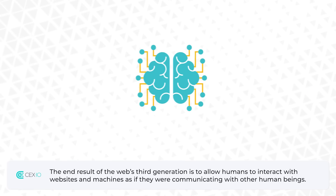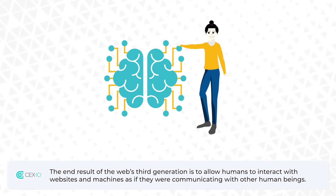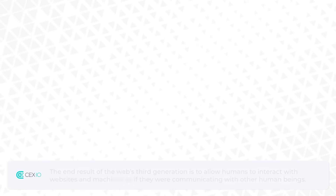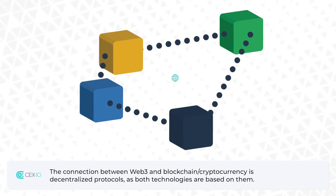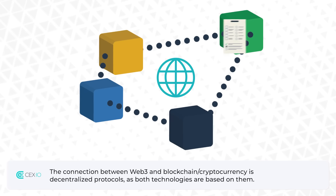The end result of the web's third generation is to allow humans to interact with websites and machines as if they were communicating with other human beings. The connection between Web 3.0 and blockchain or cryptocurrency is decentralized protocols, as both technologies are based on them.